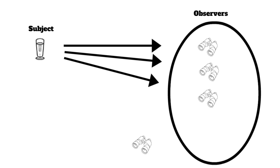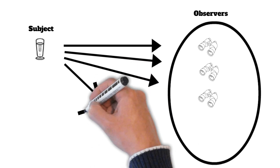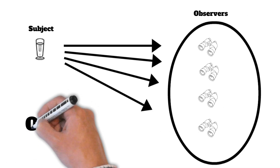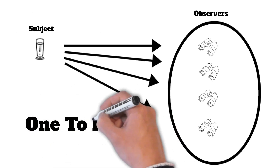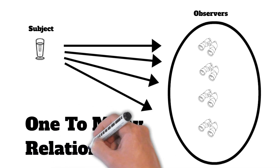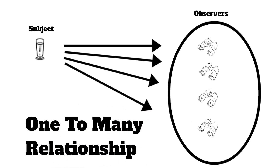Suppose one of the observers deregisters itself from the observer list — in that case it will not receive any notification on the change of the subject object going forward. So basically the observer pattern defines a one-to-many relationship between a set of objects, in which when the state of one object is changed, all the dependent objects are notified.